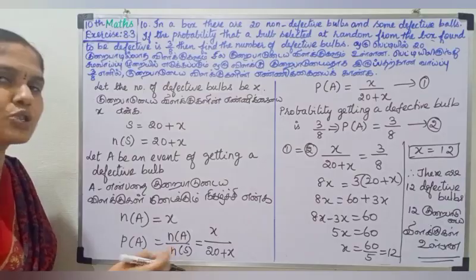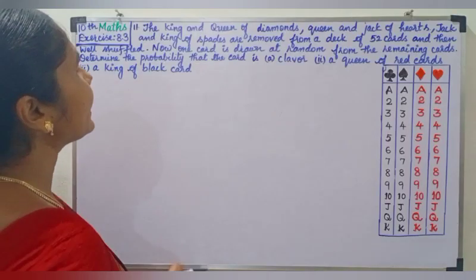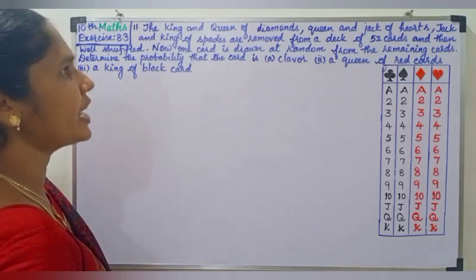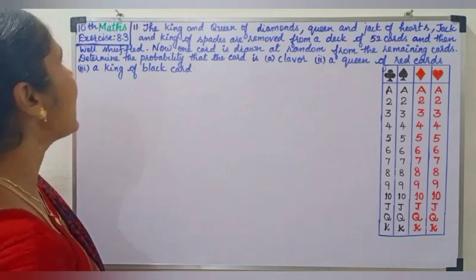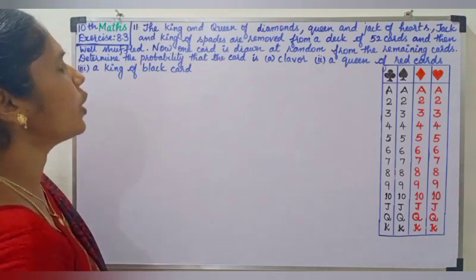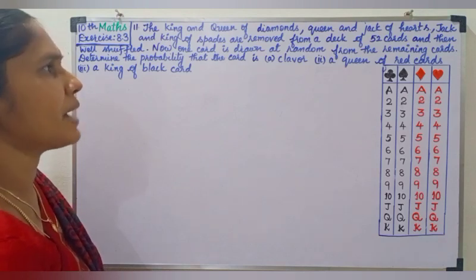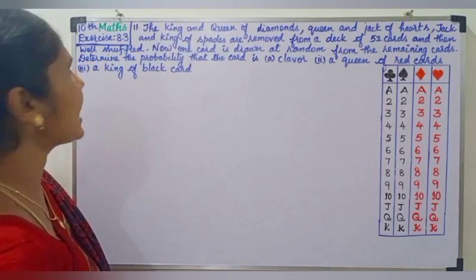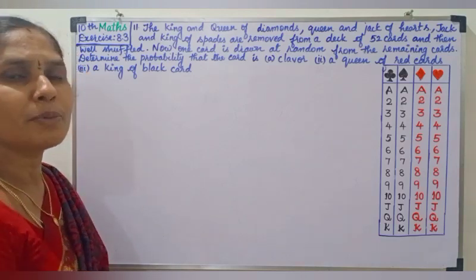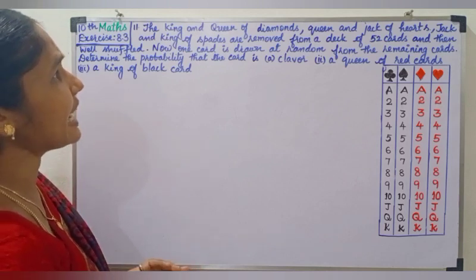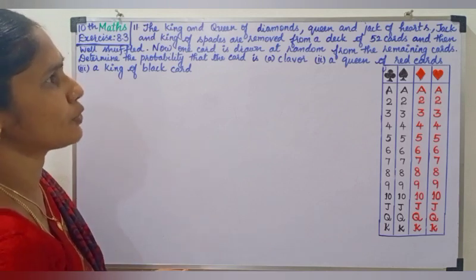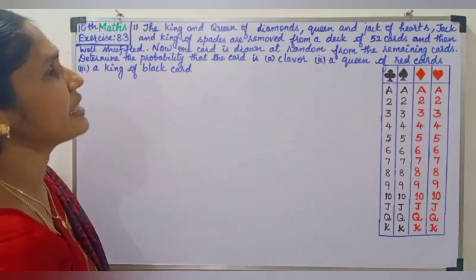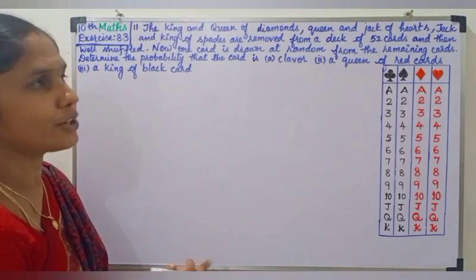10th question answer is 12. Now the next question: the king and queen of diamonds, queen and jack of hearts, jack and king of spade are removed from a deck of 52 cards and then shuffled. One card is drawn at random from the remaining cards. Determine the probability that the card is a queen of red cards and a king of black cards.